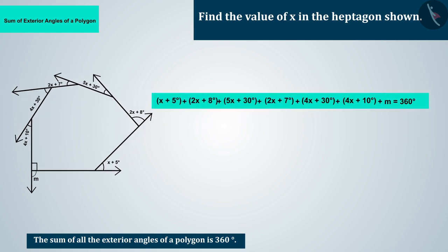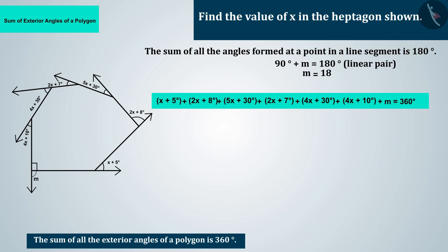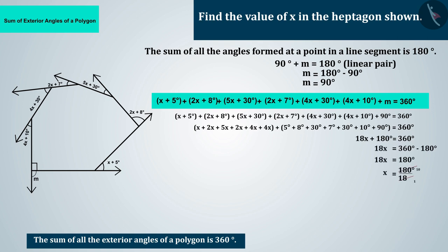In the picture, we can see that the measure of this angle is 90 degrees. We know that the sum of all the angles formed at a point on a line segment is 180 degrees. With the help of which, we find the value of M which is 90 degrees. Substituting M into this equation and on solving, the value of x comes to 10 degrees.